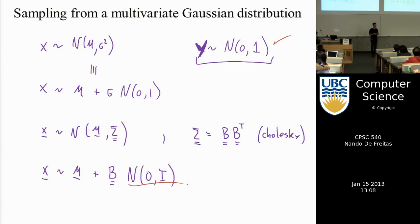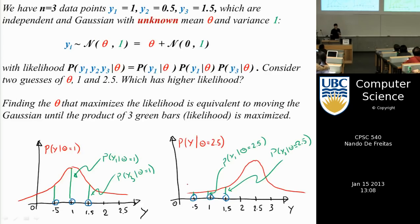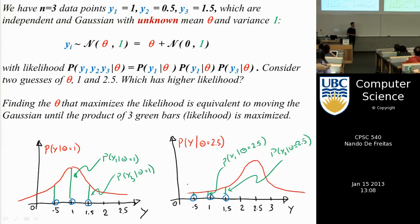In extreme forms of schizophrenia, you can't tell whether a signal comes from your senses or your imagination, and you start seeing a reality that isn't there. Understanding learning is a big part of understanding the human condition, and also relevant to designing drugs to help people with mental disability.